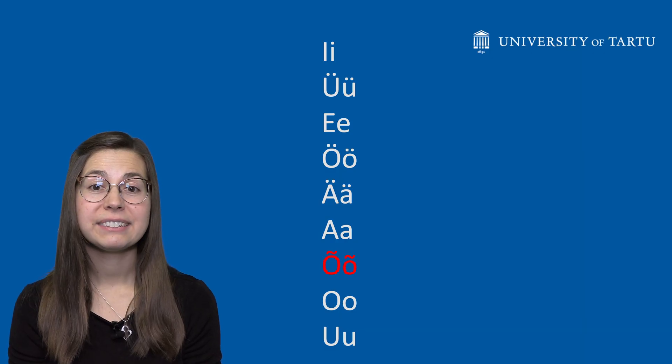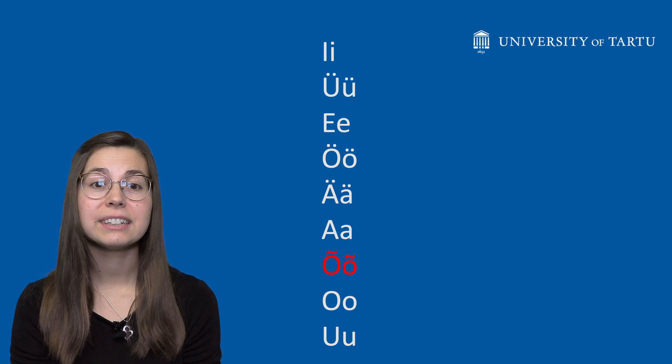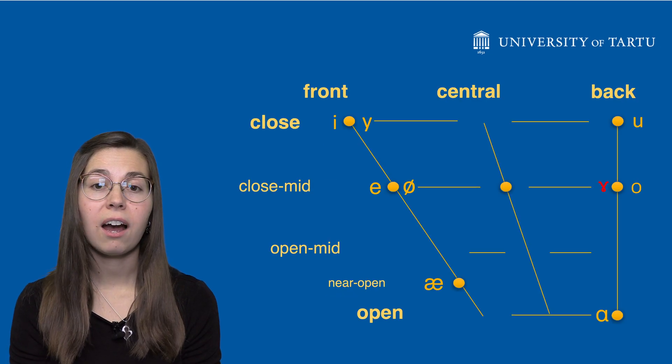This video explains the pronunciation of Estonian õ. Estonian õ is a close, mid, unrounded back vowel.